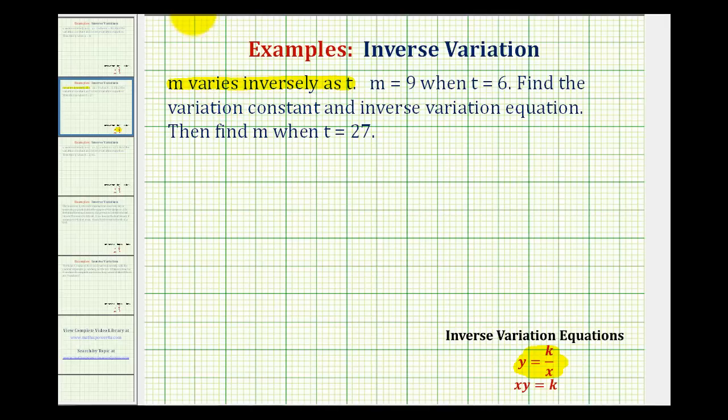So when it says m varies, that's telling us the equation will be m equals. Whenever we see the word varies, we can write an equal sign. And then because it varies inversely as t, we'll have k divided by t.